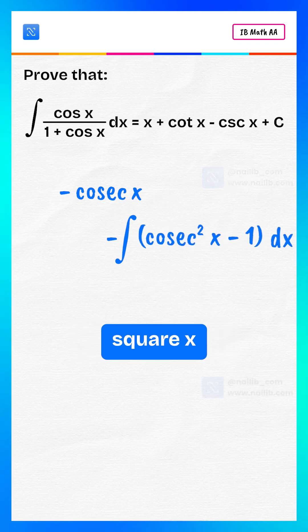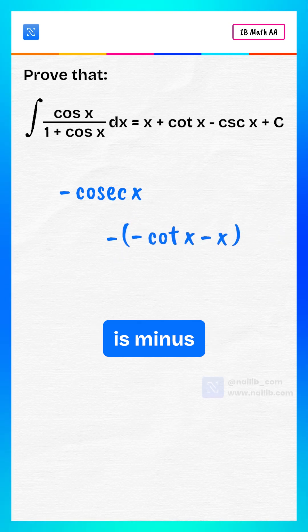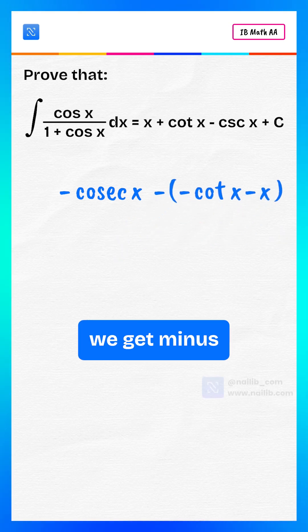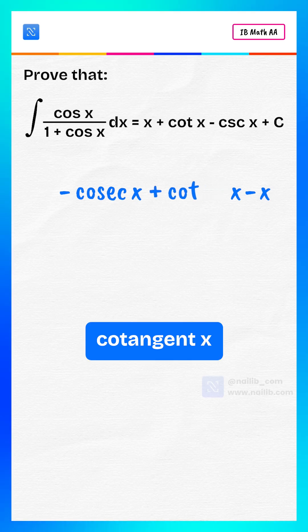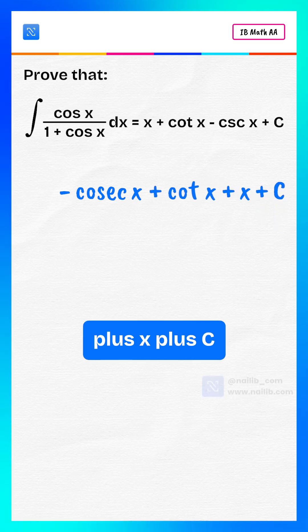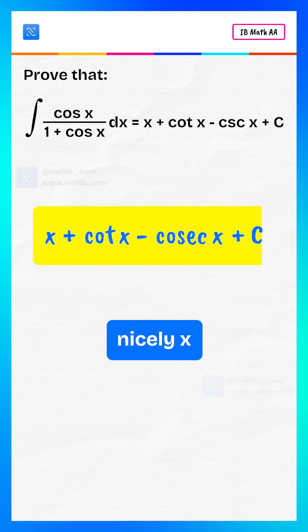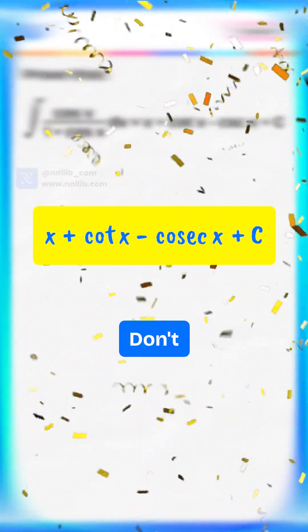So integral of cosecant square x minus 1 is minus cotangent x minus x. We get minus cosecant x plus cotangent x plus x plus c. Or rearrange nicely: x plus cotangent x minus cosecant x plus c.